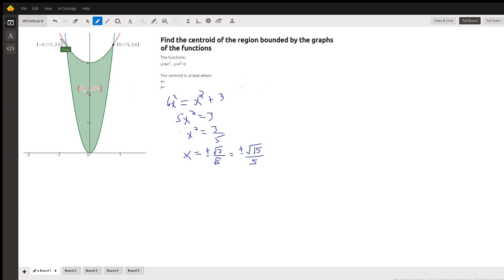This red graph is the graph of y equals x squared plus three, and the blue graph is the parabola y equals six minus x squared. We want to find the centroid of that region bounded by those graphs.